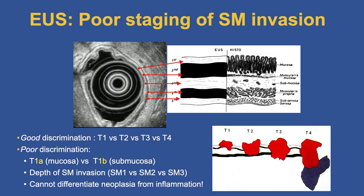I want to emphasize that as much as I love EUS — I was one of the very first globally to start doing EUS, and I went to Europe because the echo endoscope wasn't yet approved by the FDA — it is, however, very poor at staging submucosal invasion. We do a great job looking at the five layers that correlate with the histologic layers; we have bright and dark layers.